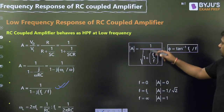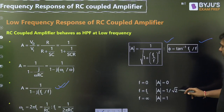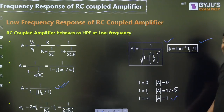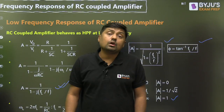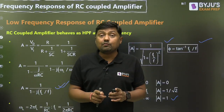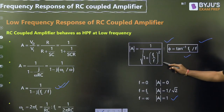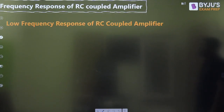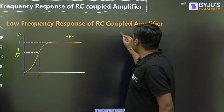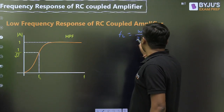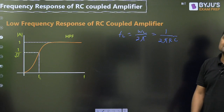We can find the magnitude and also the phase. At f equals 0, gain is 0; at f equals FL, gain is 1/√2; and at f equals infinity, the gain is 1. The maximum gain is 1. When we are increasing the frequency, the gain will increase. FL is the cutoff frequency — the frequency at which gain becomes 1/√2 of maximum gain. FL equals ωL/2π equals 1/(2πRC). This is called the lower 3dB cutoff frequency.